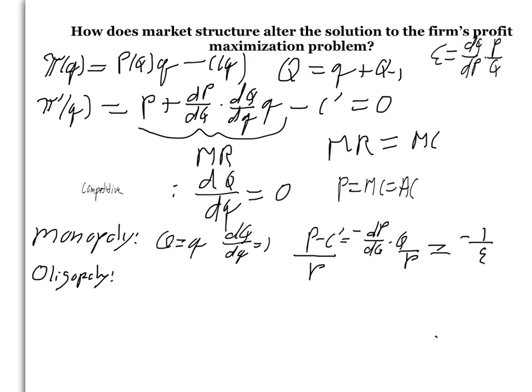So the impact of a change in my output on total industry output is given by dQ d little q is equal to 1, the direct effect, and the derivative of dQ minus 1 over dq, the net response of my rivals.